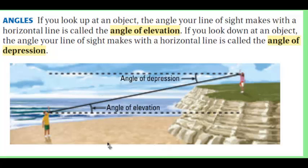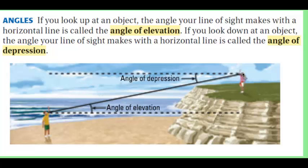A couple of terms that pop up when dealing with trigonometric applications are angle of depression and angle of elevation. An angle of depression is when you're up top looking down at something — the angle formed between a horizontal line from your eyes down to the object. A person or object from below looking up uses an angle of elevation, measured from the horizontal of your eyes up to the target object.